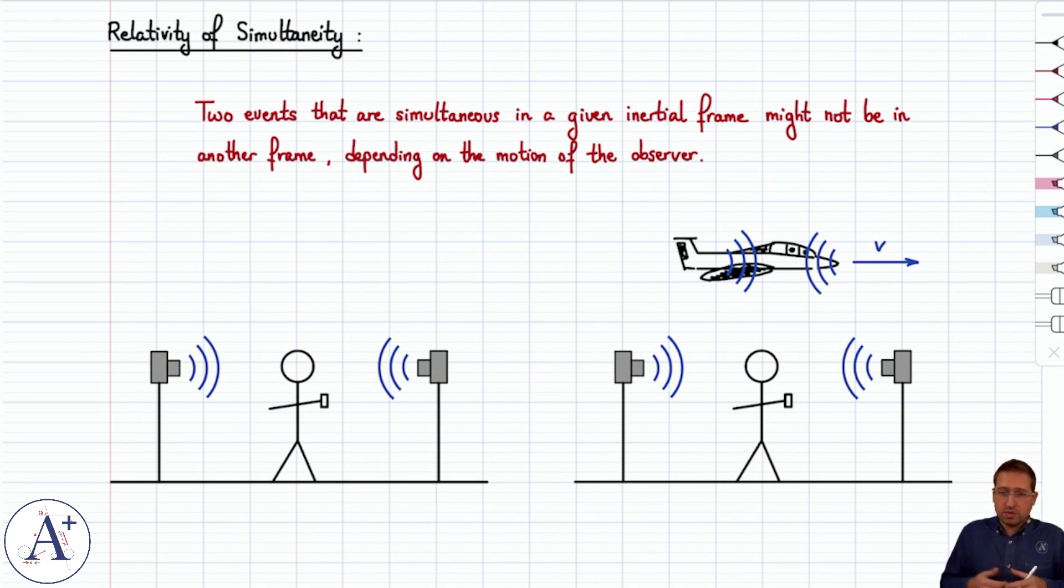But if you start studying objects or systems that can move at speeds that get close to the speed of light, well then this becomes very noticeable. And so it's important to realize that two events that are simultaneous to you are not necessarily simultaneous to another observer depending on the motion of the observer.